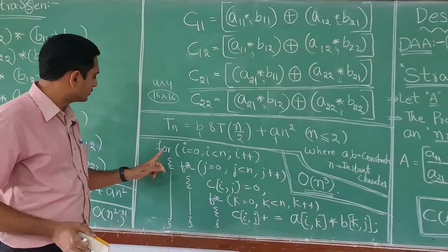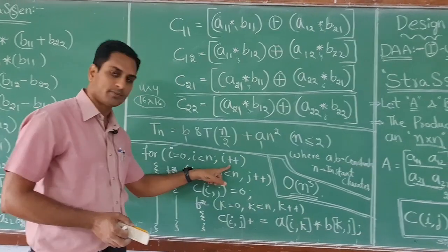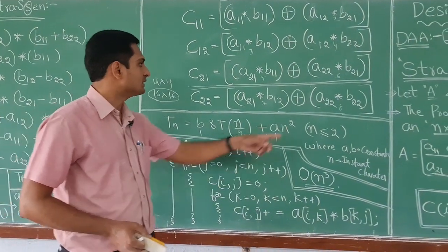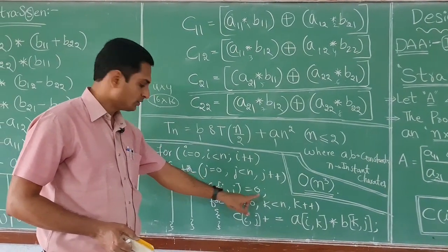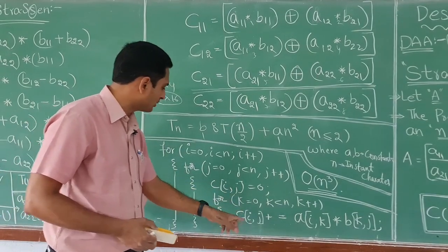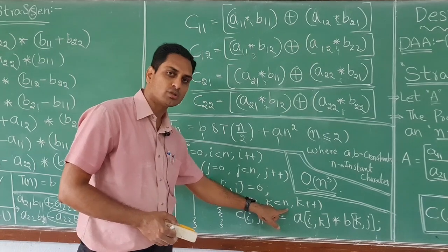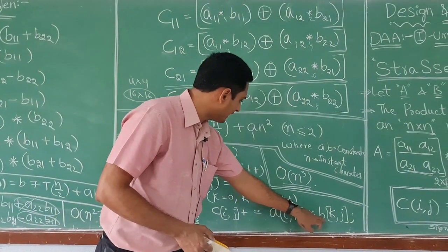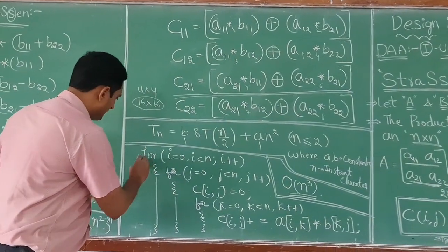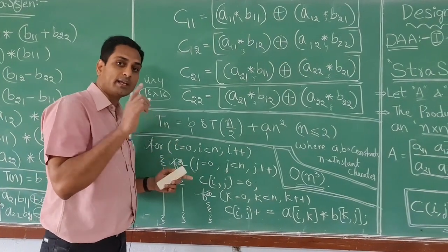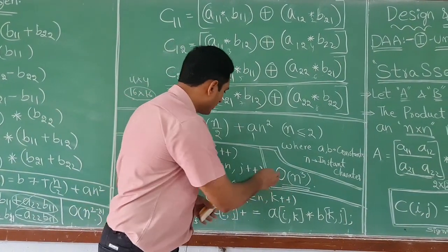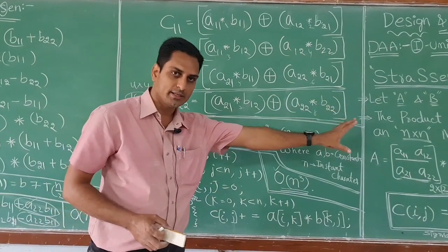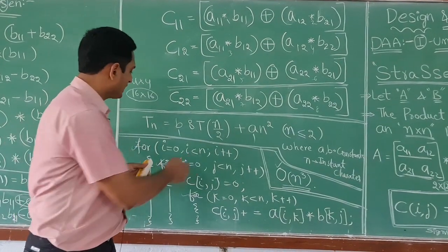To write the algorithm: use a for loop for i=0; i<n; i++, inside another loop for j=0; j<n; j++, initialize c[i][j]=0, then a third loop for k=0; k<n; k++, with c[i][j] += a[i][k] × b[k][j]. Using 3 nested for loops repeated 3 times, so the time complexity is O(n³). This is the basic matrix multiplication using the divide and conquer rule.